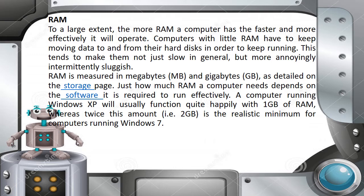To a large extent, the more RAM a computer has, the faster and more effectively it will operate. Computers with little RAM have to keep moving data to and from their hard disks in order to keep running, making them intermittently sluggish. RAM is measured in megabytes (MB) or gigabytes (GB). A computer running Windows XP will usually function quite happily with 1 GB of RAM, whereas 2 GB is the realistic minimum for computers running Windows 7.